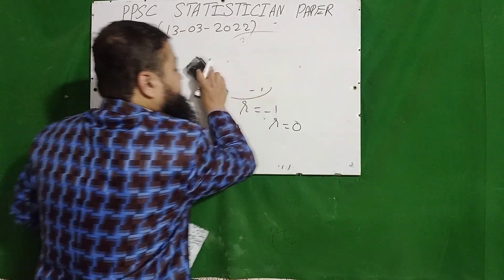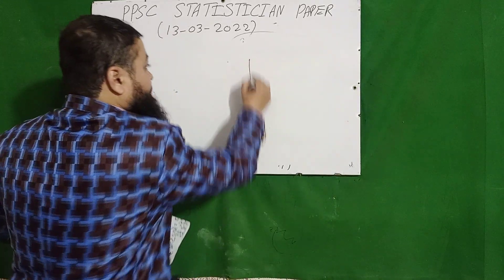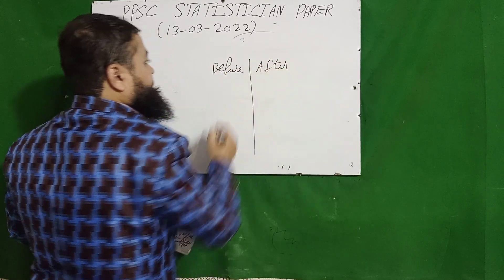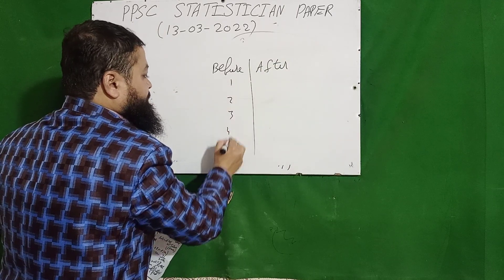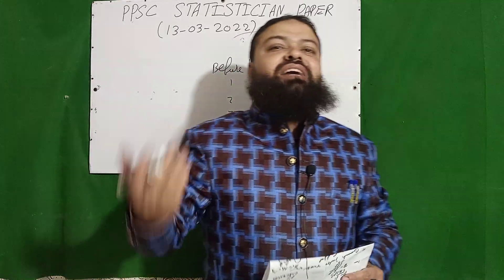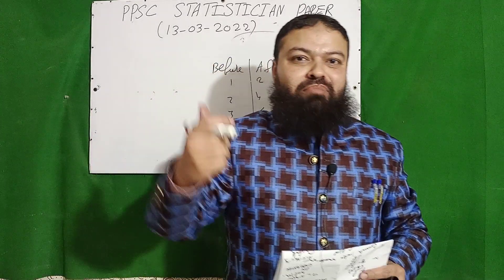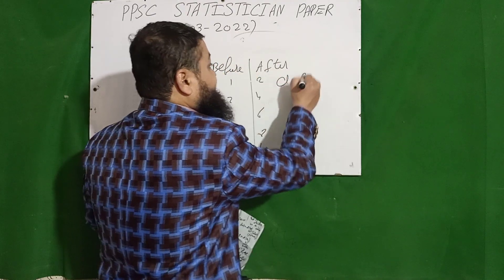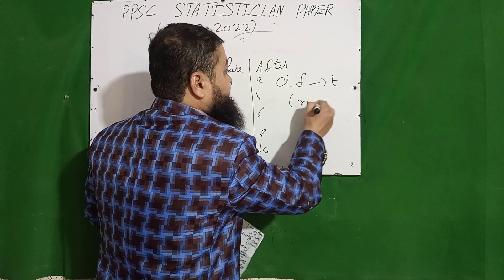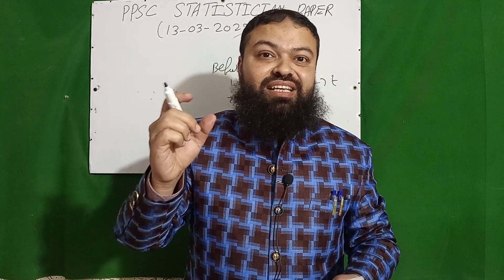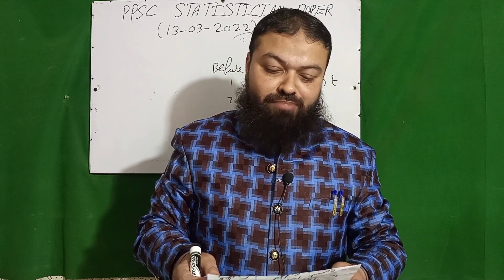The next question involves paired observations — for example, measurements before and after training for five soldiers. The values before are 1, 2, 3, 4, 5 and after are 2, 4, 6, 8, 10. The degree of freedom for the paired t-test is n − 1.